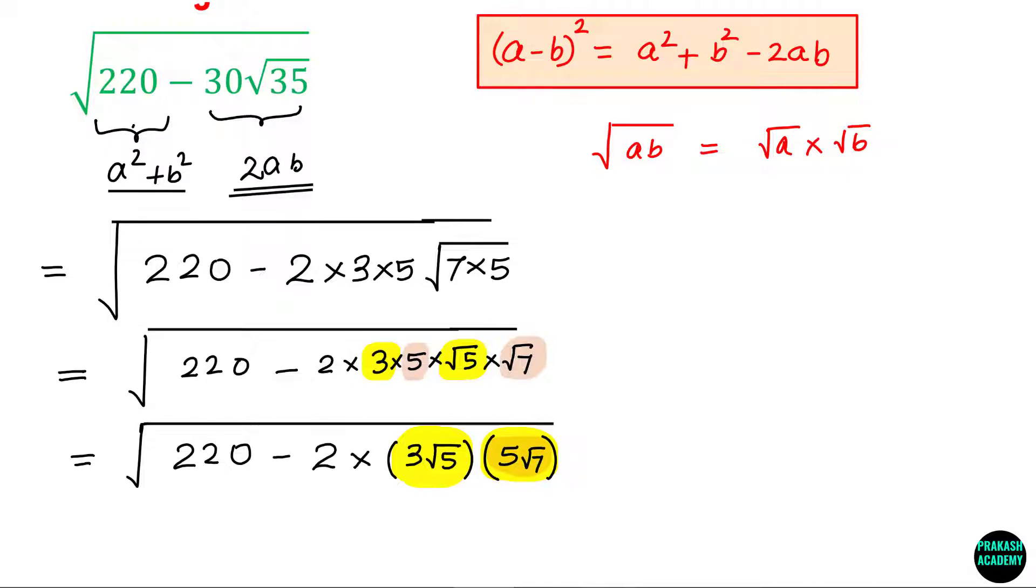Let us check whether a² plus b² is 220 or not. So 3 root 5 whole square will be 9 into 5, that is 45, and this will be 175. If you add, this is exactly 220. So this means we have found these two numbers.